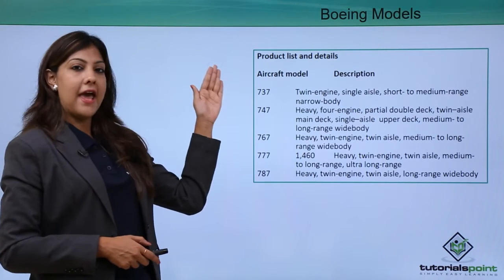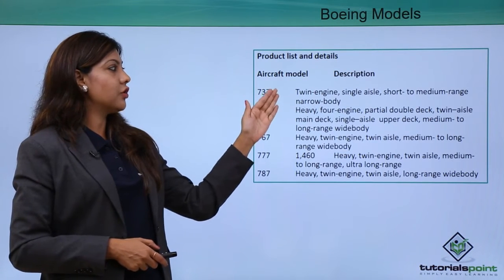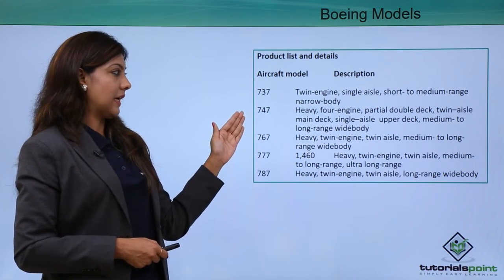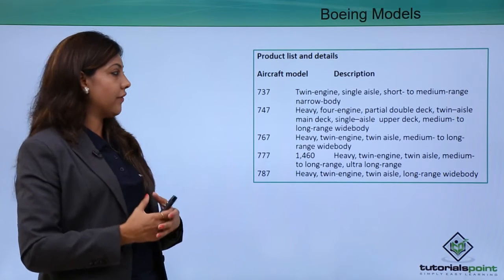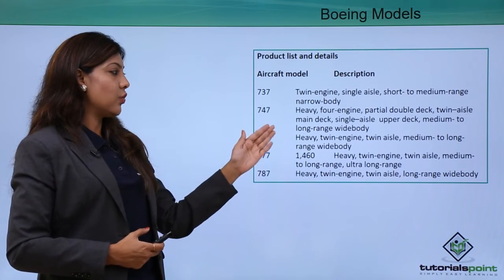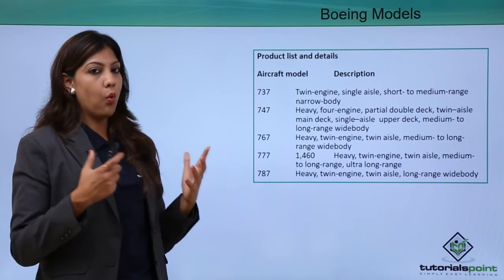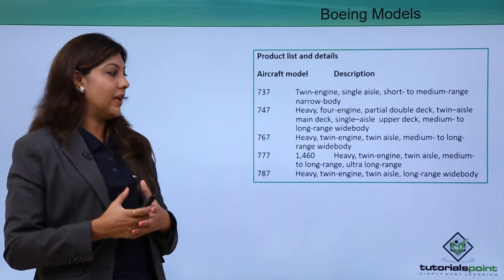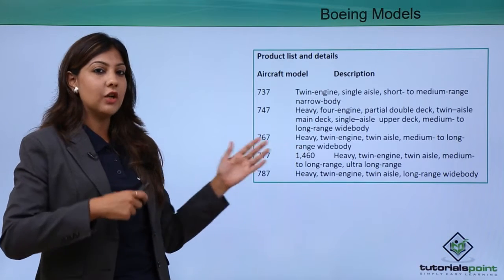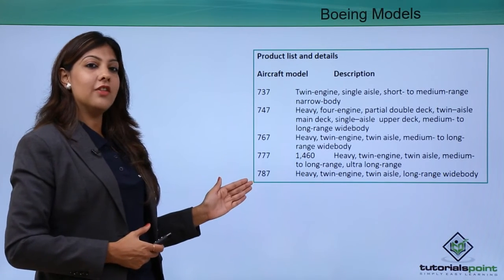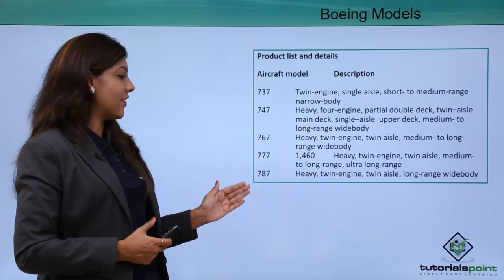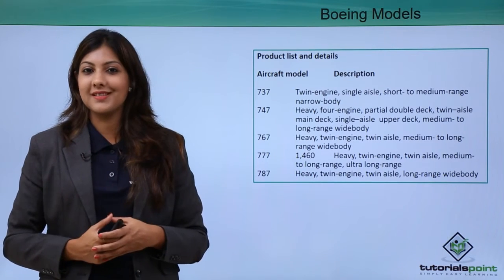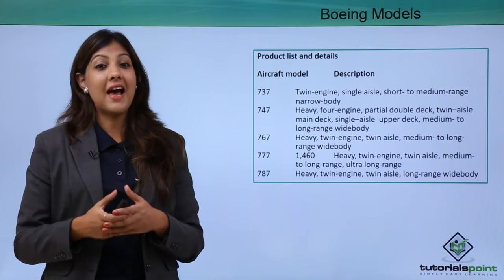Under Boeing, the models include: Boeing 737, twin engine single aisle, short to medium range narrow body; Boeing 747, heavy four engine aircraft; Boeing 767, heavy twin engine twin aisle medium to long range wide body; Boeing 777 (Triple Seven), heavy twin engine twin aisle, medium to ultra long range; and Boeing 787 Dreamliner, heavy twin engine twin aisle, long distance only.